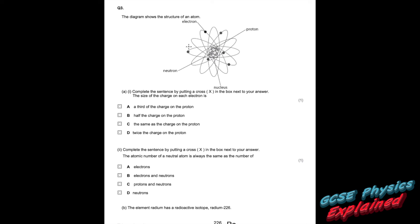Question three: the diagram shows the structure of an atom. Complete the sentence — the size of the charge on each electron: is it a third of the charge on a proton? No. The charge on a proton is plus one; the charge on an electron is minus one. So half the charge of the proton? No. The same as the charge on the proton? Yes — we're looking for the size, and that size is one and that size is one.